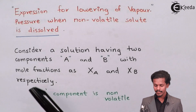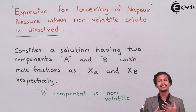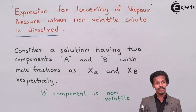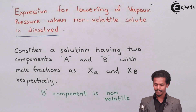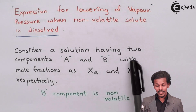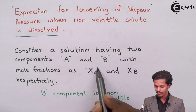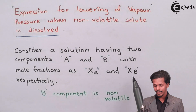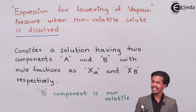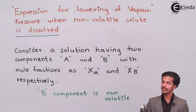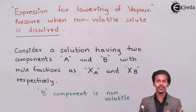Suppose I have a solution which has two components, A and B. These components are usually the solute and solvent, and multiple solutes can also be present. So let us consider only two components, A and B, with mole fractions XA for component A and XB for component B respectively. Here, B is a non-volatile solute, so it will not contribute its vapor pressure to the whole solution.